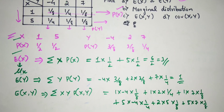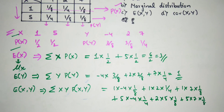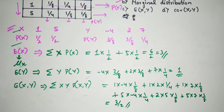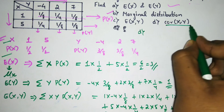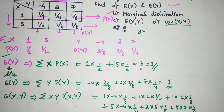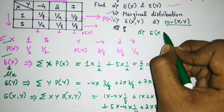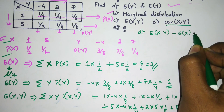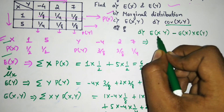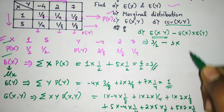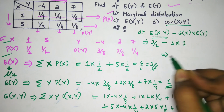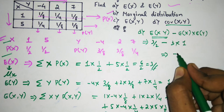After adding all these terms, E(XY) = 3/2. Now for the last part, covariance of X and Y. The formula is: Cov(X,Y) = E(XY) - E(X)·E(Y) = 3/2 - 3×1 = 3/2 - 3 = -3/2. So the covariance of X and Y is -3/2.